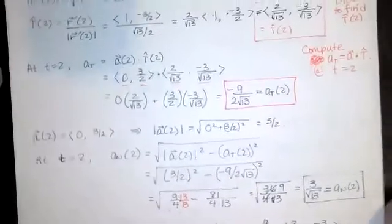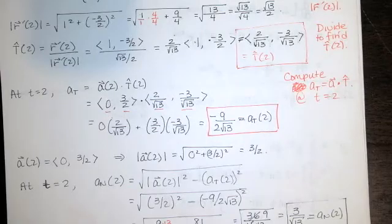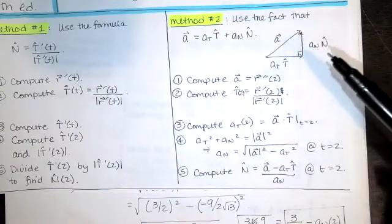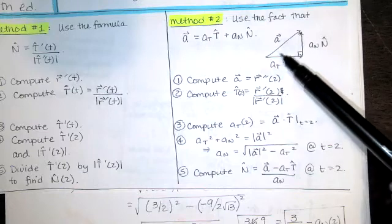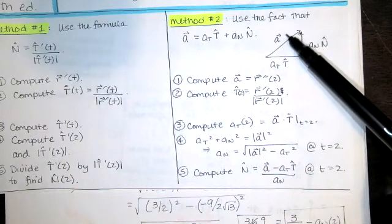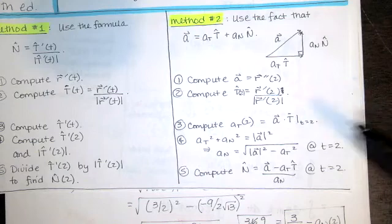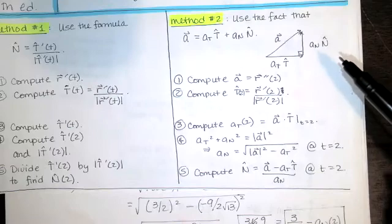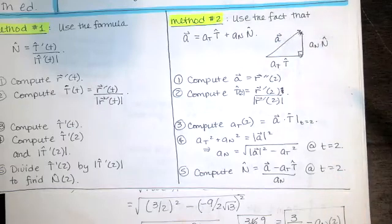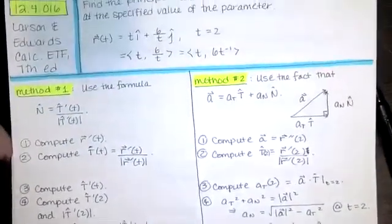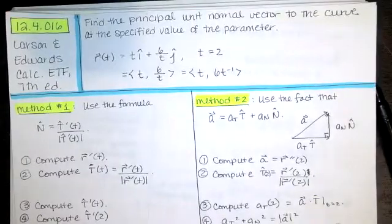That is method number 2. I highly recommend it — the computation is relatively straightforward. You just have to remember the geometry: the tangential component of acceleration is the projection of a onto T̂, which is the dot product. Use the Pythagorean theorem to find the other side of the triangle, and once you have all the pieces you can solve for N̂. I'll use a different video to demonstrate method number 1. Please let me know if you have any questions about this problem.